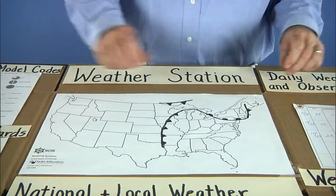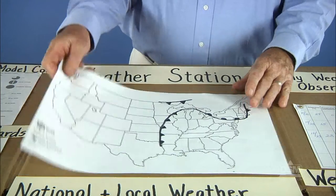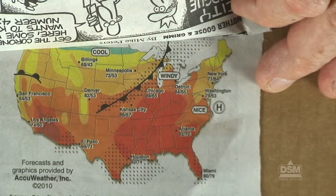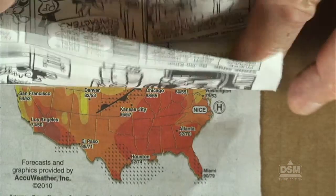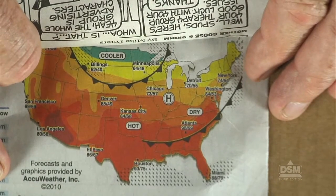Have the students retrieve their weather stations and remove the outline map. Looking at today's weather report, draw the students' attention to the lines or shaded areas on the map that connect areas of the same temperature or barometric pressure.